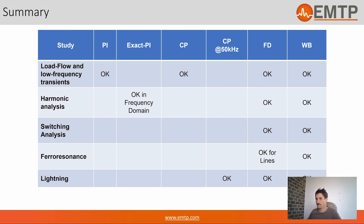For underground cables, there are two types. The first is the standard cable type, where you need the position of the cable underground, the distances between cables, and information about insulation and conductor layers inside — including resistivity and insulation characteristics. For pipe-type cables, it's similar except all cables are gathered inside a pipe, so you also need to provide the position of the pipe.